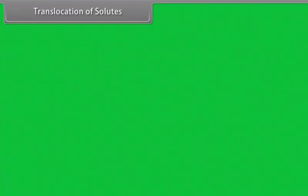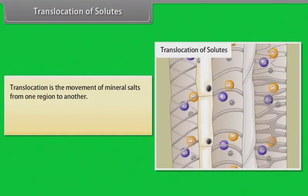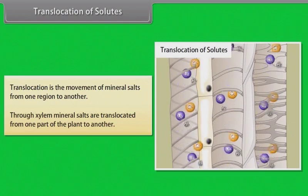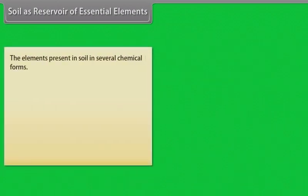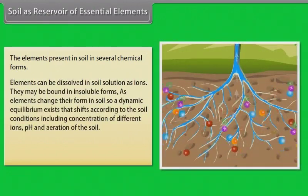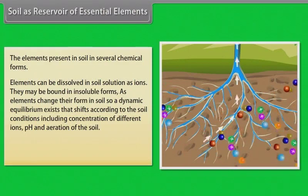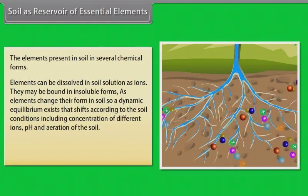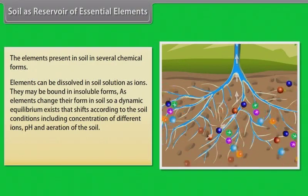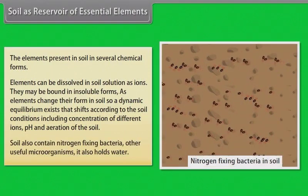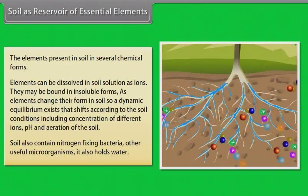Translocation of solutes: translocation is the movement of mineral salts from one region to another. Through xylem, mineral salts are translocated from one part of the plant to another. Soil as reservoir of essential elements: the elements present in soil exist in several chemical forms. Elements can be dissolved in soil solution as ions, or may be bound in insoluble forms. A dynamic equilibrium exists that shifts according to the soil conditions, including concentration of different ions, pH and aeration of the soil. Soil also contains nitrogen-fixing bacteria and other useful microorganisms.